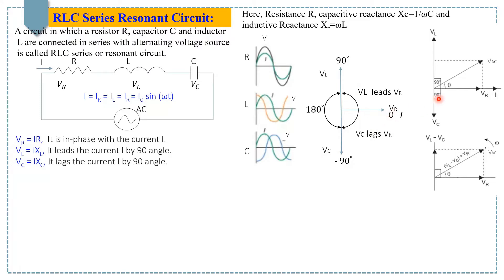Here you can see the phasor diagram of the RLC series circuit when the circuit is acting as an inductive circuit, meaning VL is greater than VC as shown in this figure. Note that if VC is greater than VL, the circuit will behave as a capacitive circuit. The vectors VL and VC are opposite to each other — the voltage across the capacitor and voltage across the inductor are at 180 degree angles.